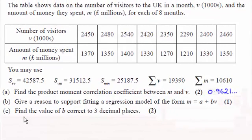Hi there. Now for part C here we've got to find the value of B correct to three decimal places for this regression model. So how do we do it?